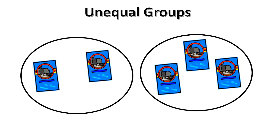These two groups would be considered unequal because the group on the left has two tickets and the group on the right has three tickets.